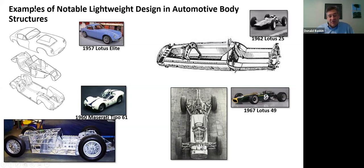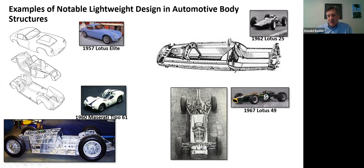We already talked about the Maserati Tipo 61 birdcage — the closest to a pure space frame with all those tiny welded tubes. The Lotus 25 was the first monocoque structure in a Formula One car — aluminum panels riveted together like an aircraft, with the primary load taken up by a half-tube structure. The Lotus 49 was the first racing car to use the engine as a stressed member — already discussed. The Porsche 917 — from the Steve McQueen movie Le Mans — had very small, light aluminum tubes on the hairy edge of stiffness, probably barely meeting a factor of safety of 1.0001. Many drivers were killed in it because the structure would collapse on impact and the driver's feet stuck out in front of the front wheels.